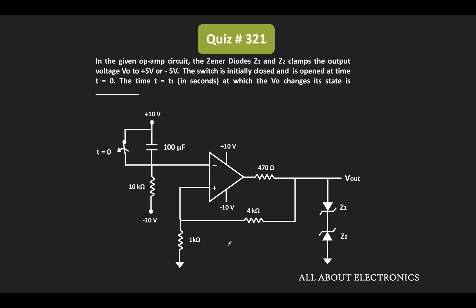Hey friends, welcome to the YouTube channel all about electronics. In this question, we have been given this op-amp circuit. In this circuit, Zener diodes Z1 and Z2 clamp the output voltage of this op-amp to 5V. Initially, this switch is in the closed condition and at time t equal to 0, it is opened. We have been asked to find the time t1 at which the state of the output voltage will get changed.